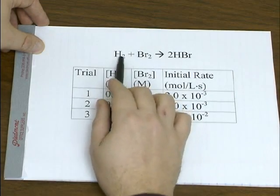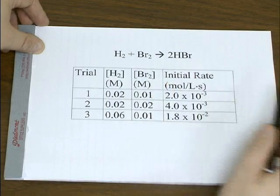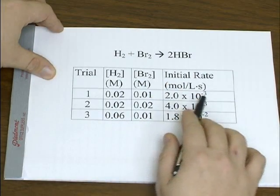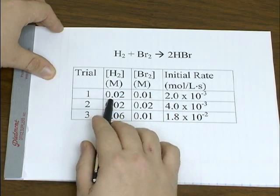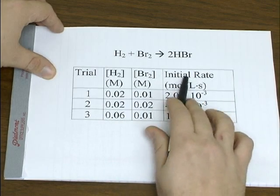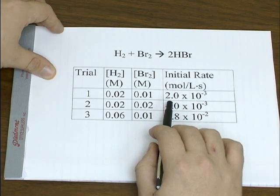Let's say you're studying the reaction of hydrogen and bromine to give you hydrogen bromide. You do the experiment with hydrogen and bromine concentrations of 0.02 and 0.01 respectively, and you measure the initial rate to be 2 times 10 to the negative 3.